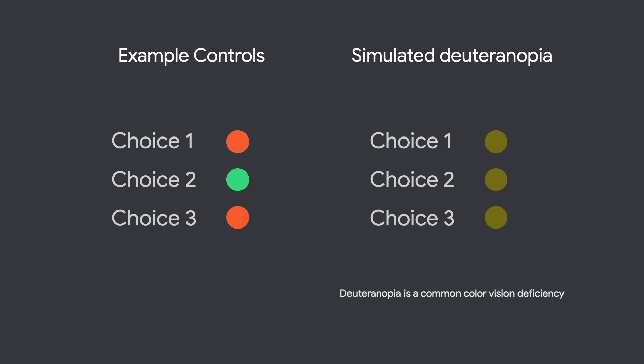A common mistake is to change a visual indicator between red and green, but there are a lot of people who aren't able to easily distinguish those hues. Adding a text label that changes from off to on, or an X that changes to a checkmark, can benefit all your users.